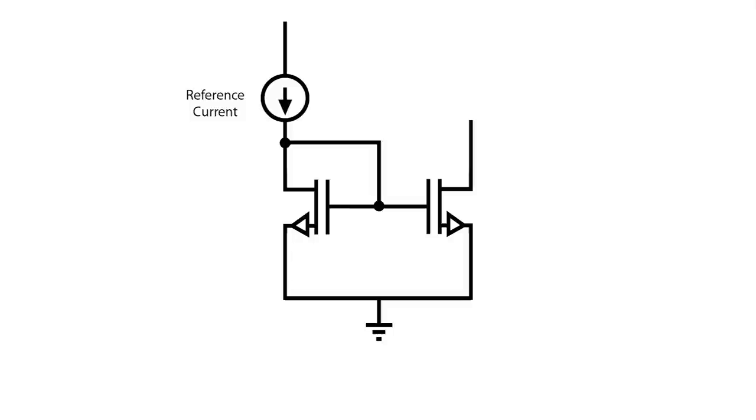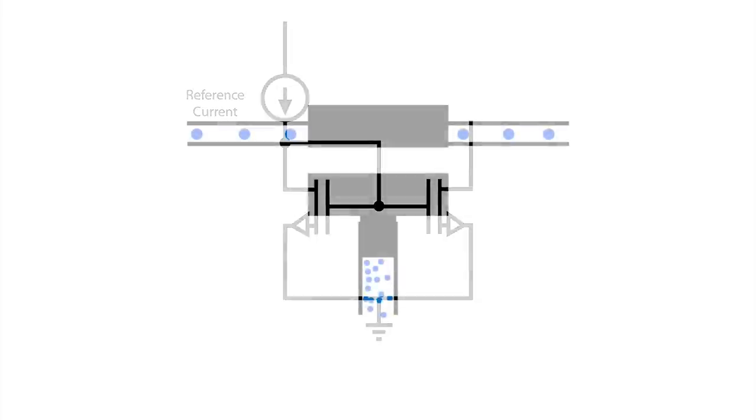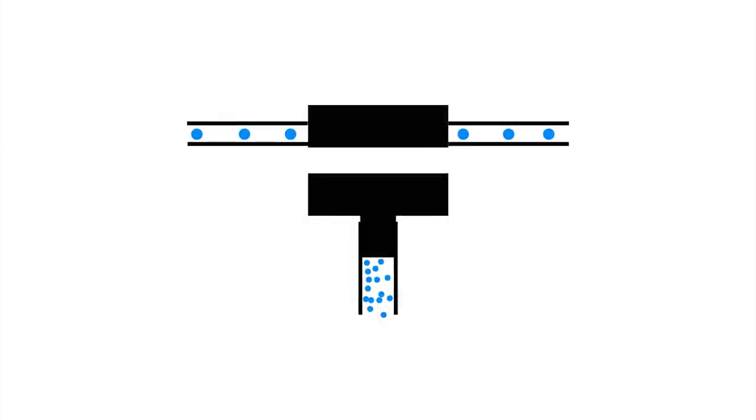We now consider the basic MOSFET current mirror, which follows the same principles of the BJT current mirror, but uses two field effect transistors instead. Voltage is analogous to water pressure in our example, so we have a pressure activated water valve to serve as a model.